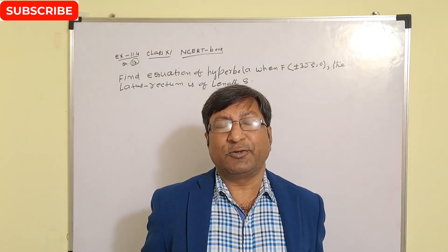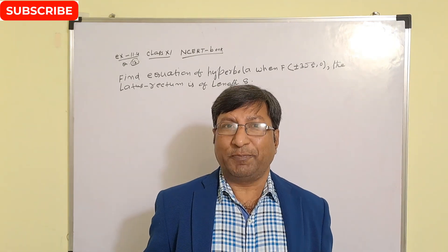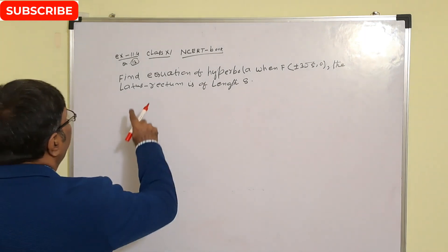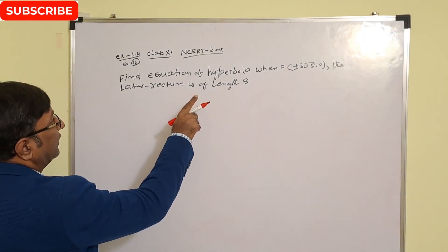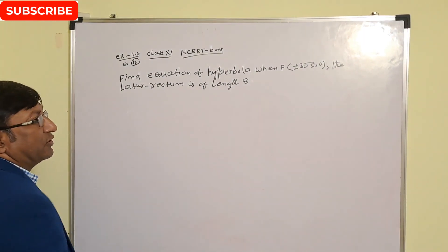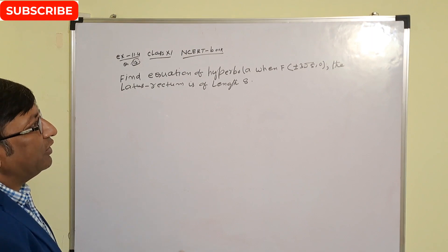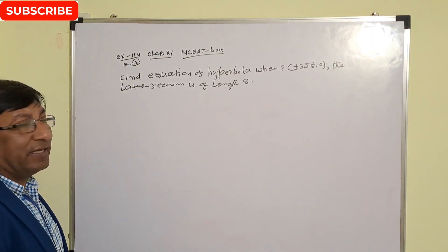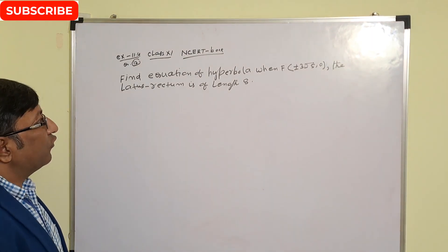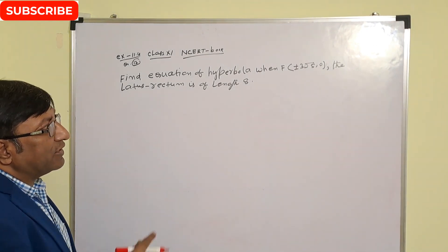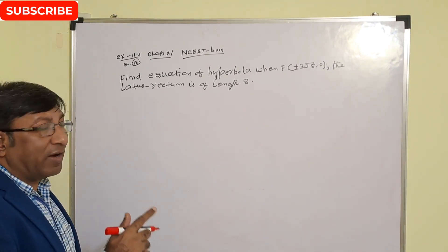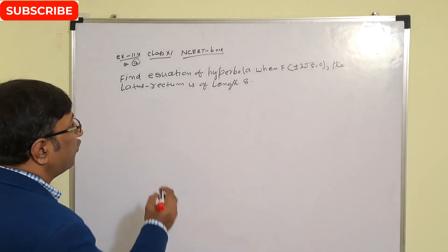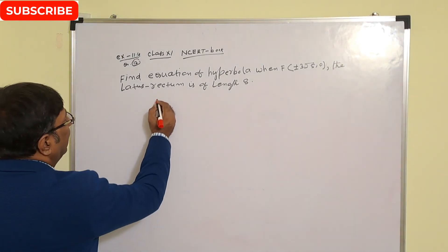Let us see the most important question on hyperbola. The question is: find the equation of hyperbola when foci are (±3√5, 0) and the length of latus rectum is 8. Since foci are given as (±3√5, 0), the foci lie on the x-axis.